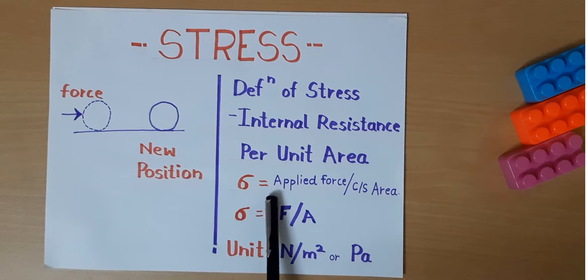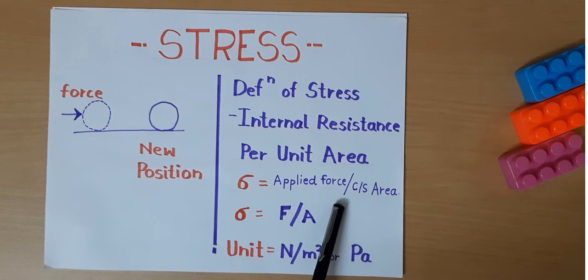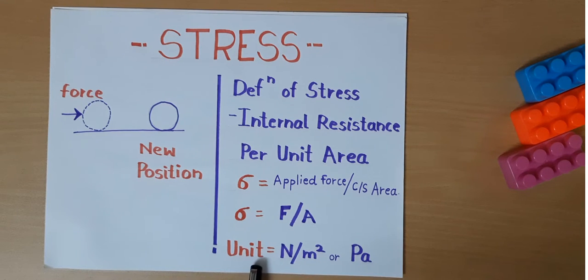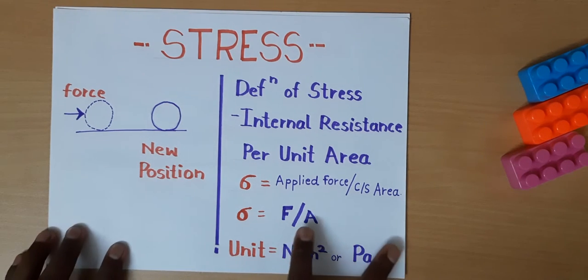Mathematically, it is written as applied force divided by cross section area, and is denoted by Greek letter sigma. Sigma equals force per unit area. Its unit in the SI system is Newton per meter square or Pascals, also converted into megapascals and gigapascals. Let's understand with an example.